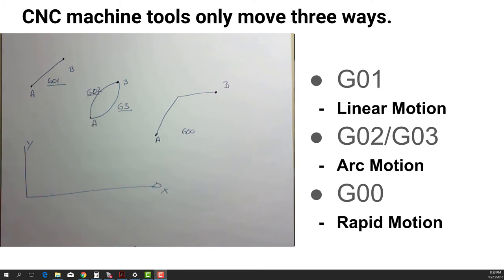So remember, no matter how complex the motion in the machine seems, it's either moving point to point in a straight line at a specific speed, it's moving point to point in an arc motion with a constant radius arc at a specific speed, or it's just moving as fast as it can.